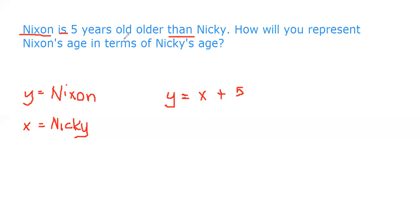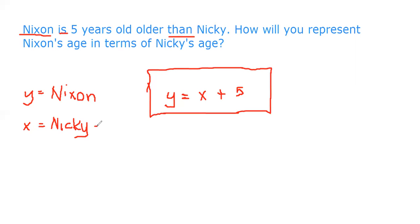So X + 5 is the representation of Nixon's age. If Nikki's age is seven, then Nixon's age is seven + 5 = 12 years old. So Nixon's age depends on Nikki's age. The representation of Nixon's age is Y = X + 5.